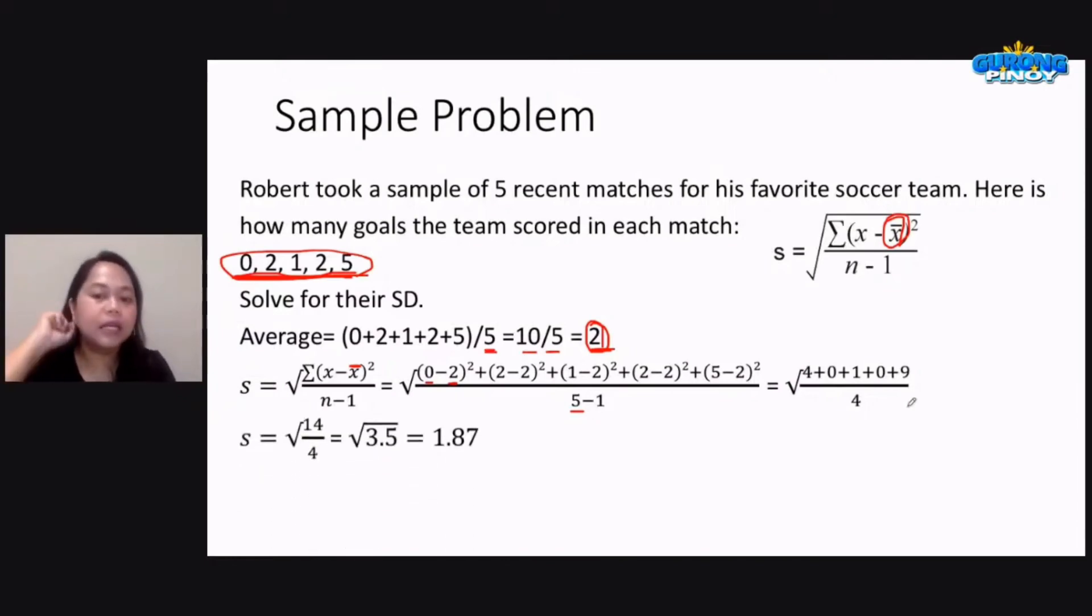Now adding it all up, that gives us 4 plus 1 plus 9, neglect na po natin itong mga zeros, that would give us 14. So square root of 14 over 4, or that would be square root of 3.5, and that means our standard deviation is 1.87.